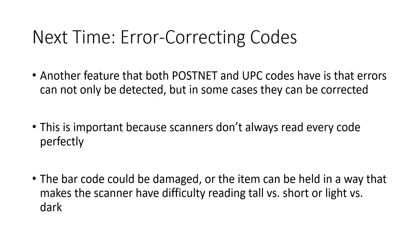Next time we're going to be talking about something called error correcting codes. A feature of both PostNet and UPC codes is that errors can not only be detected, but in some cases they can actually be corrected. This is important because we don't want the customer at the store to have to scan their object over and over again. The barcode on the object could be damaged, the person could be holding it in a weird way, or a shadow might cause the scanner not to read it properly. We want to set up our code to minimize those errors as much as possible.